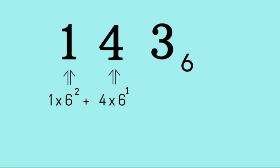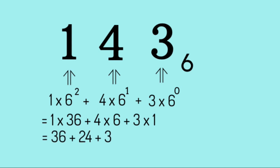For the digit 3, we have 3 times 6 to the power of 0, since there are no digits in front of it. Summing, we get 1 times 36 plus 4 times 6 plus 3 times 1, which is equal to 36 plus 24 plus 3, which is equal to 63.